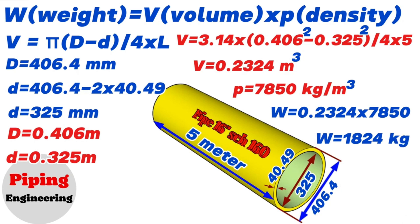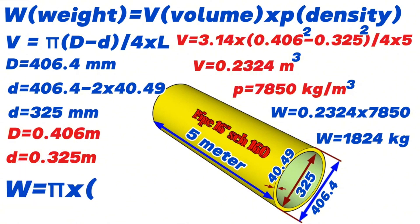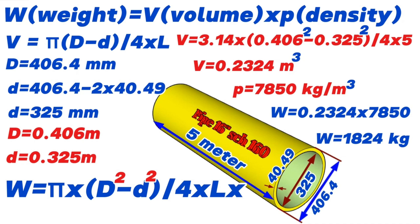Summarizing what we learned in this video, we can use this combined formula to find the weight of the pipe: Weight equals π multiplied by, in brackets, outside diameter squared minus inside diameter squared, divided by 4, multiplied by the length of the pipe, and multiplied by the density of the pipe material. By using this method, you can easily calculate the weight of pipe pieces from any pipe drawing.